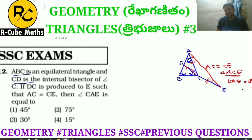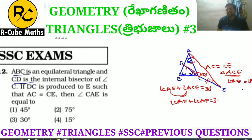The angle ACE inside the triangle is 150 degrees (since the bisected angle gives 30 degrees on that side, and the straight line gives 150 degrees). The remaining sum of the two angles CAE and CEA equals 30 degrees. Since angle CAE equals angle CEA, angle CAE plus angle CAE equals 30 degrees, so angle CAE equals 15 degrees. The answer is option 4.